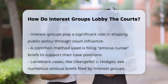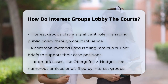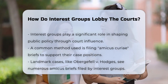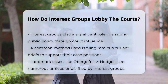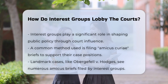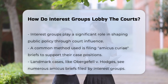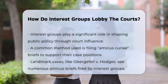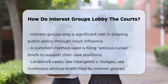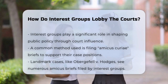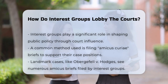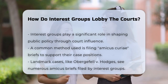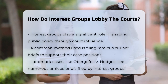One of the most common methods is by filing what's called an amicus curiae brief, or a friend-of-the-court brief. This brief allows the interest group to provide the court with information and arguments that support their position on a case. For example, in the landmark case of Obergefell v. Hodges, which legalized same-sex marriage nationwide, numerous interest groups filed amicus briefs arguing for or against the rights of same-sex couples to marry.